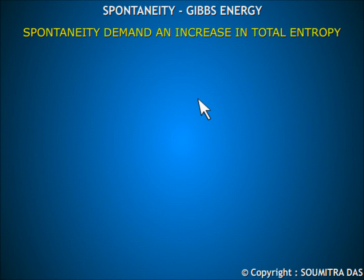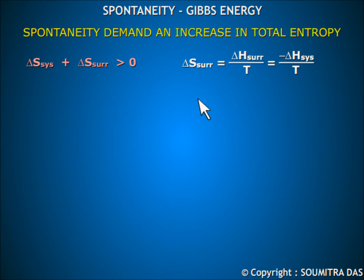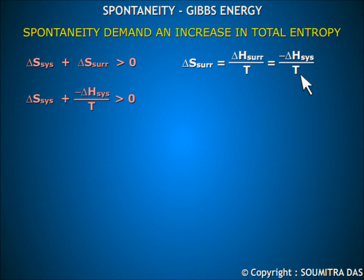Spontaneity demands an increase in the total entropy of the system. That is, delta S system plus delta S surrounding should be greater than zero. Delta S surrounding equals minus delta H system divided by the absolute temperature. Spontaneity of a process in a closed or open system therefore cannot be judged by delta H system or by delta S system alone.